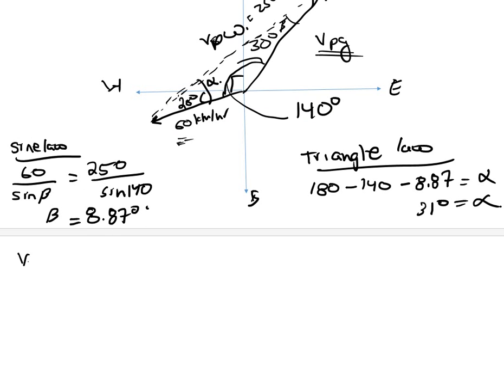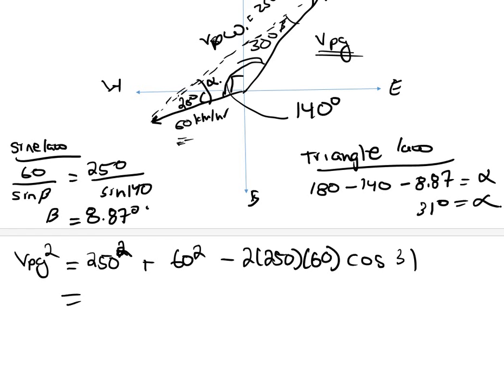So VPG squared equals 250 squared. Hopefully you guys know your cosine law. And 60 squared minus 2 times 250 times 60 cos alpha, which is 31. And if you put that all together, you're gonna get VPG equals 201 meters per second. And the direction, once again, has to be... We made sure it was like that. So it's north 30 degrees east.